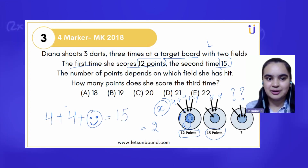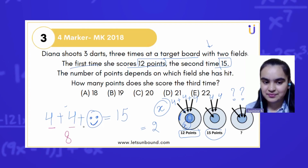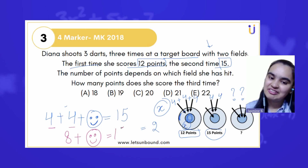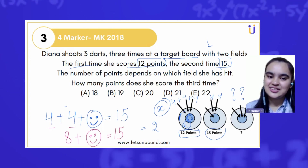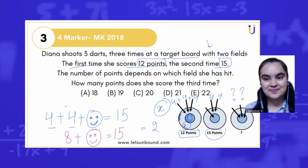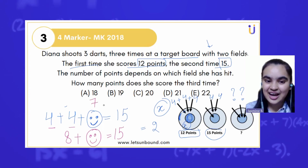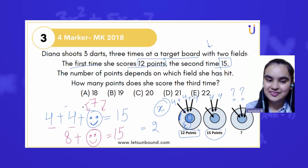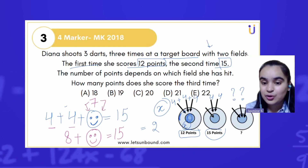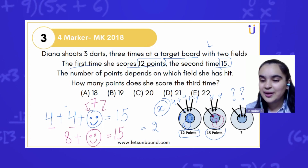Let's solve it now. 4 plus 4 is 8. 8 plus this unknown smiley equals 15. What should we add to 8 to get 15? It's 7! So now we know the value of the smiley is 7. Whatever arrow goes into the inner field is worth 7 points.